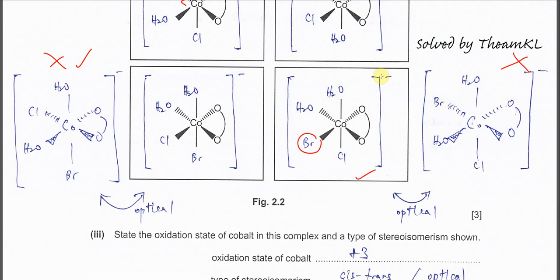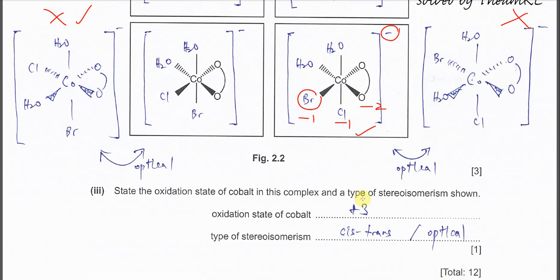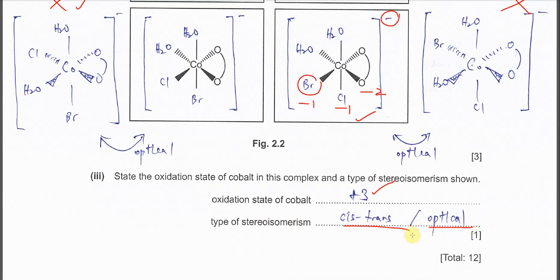So we know that the bidentate ligand is -2. Overall charge is -1. Because we know that bromide and chloride are both -1, -1 and this one is -2. So cobalt therefore must be +3 because overall charge is -1. So here is +3. Type of stereoisomer, you can put either cis-trans or optical. Okay that's all. Thank you.